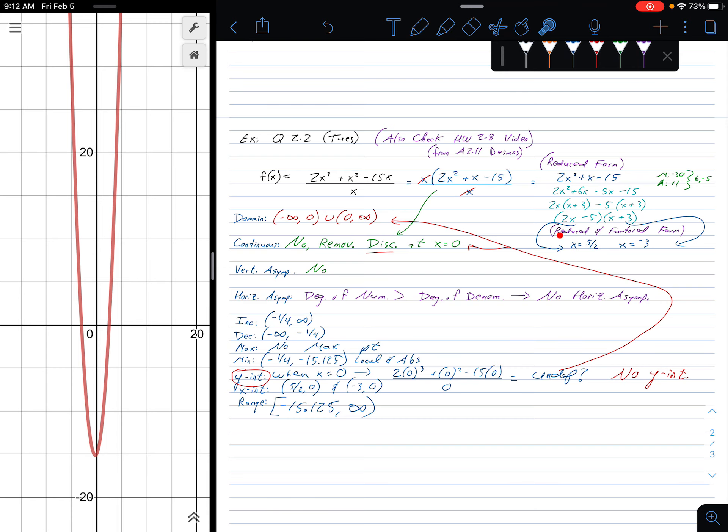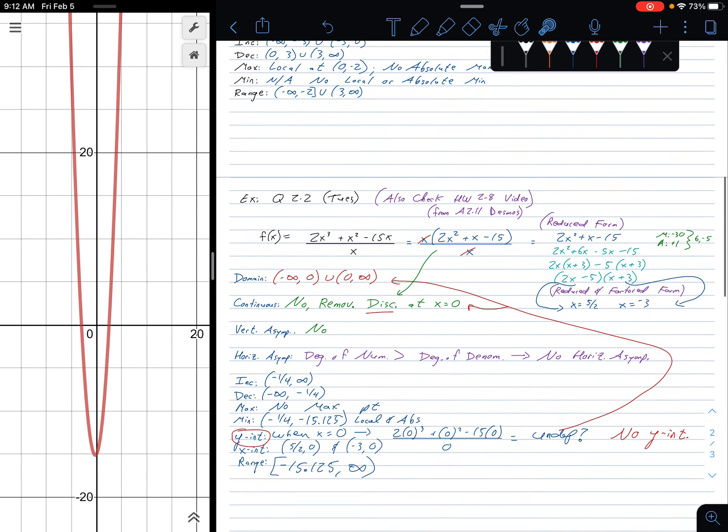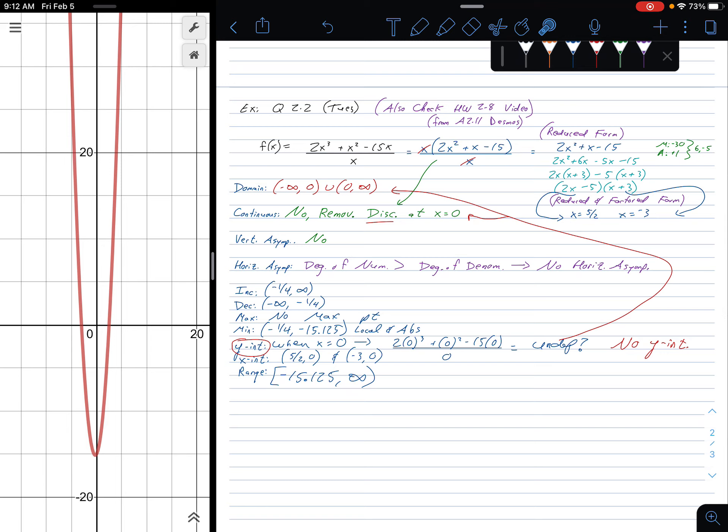Hopefully that clears up some of the confusion. We use the reduced form to find my X intercepts here. You're not always going to be able to do that. Like up here, there were none, so we couldn't find any X intercepts. I hope this is helpful. Please take this video and watch it and maybe take down some notes if we don't get to it in your class or just use it as a review. Good luck.